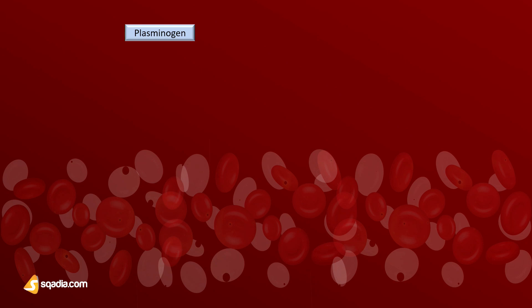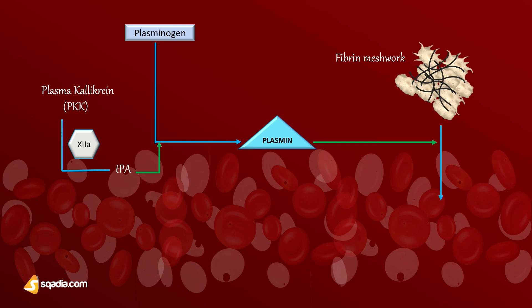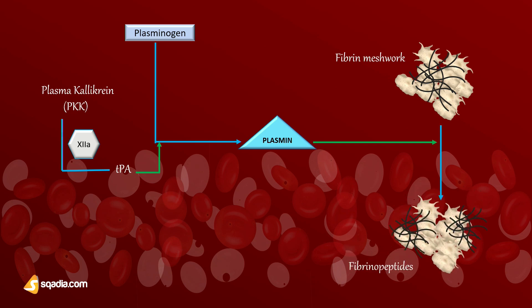Plasmin is generated by the enzymatic catabolism of the inactive circulating precursor known as plasminogen. It is present in the plasma, binds to the fibrin, and is converted to plasmin either by the factor 12 dependent pathway or by tissue plasminogen activator, or TPA.